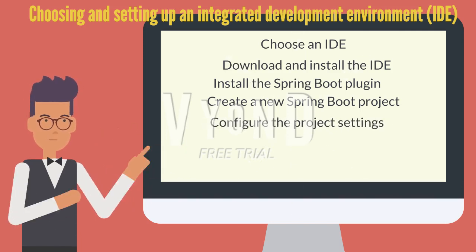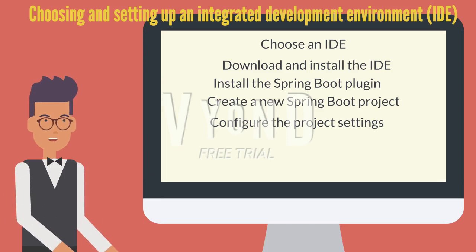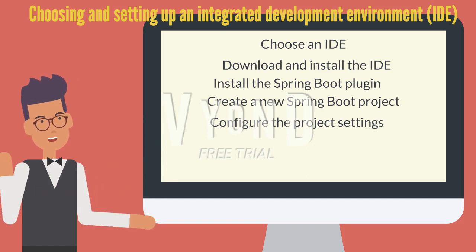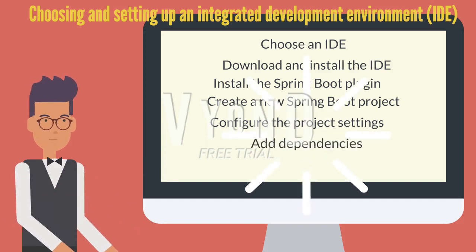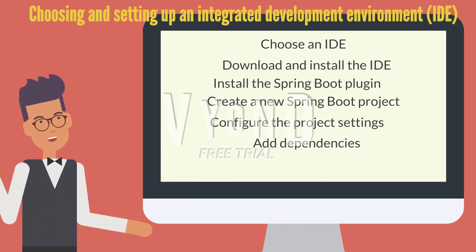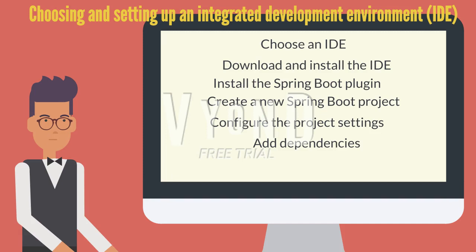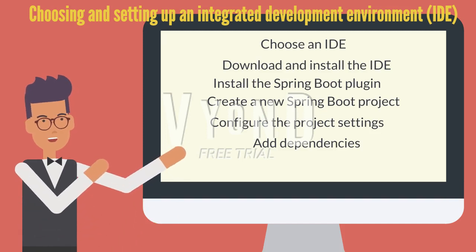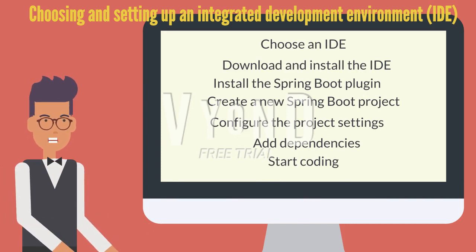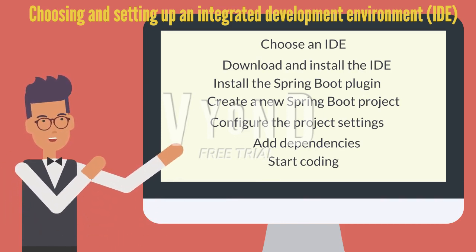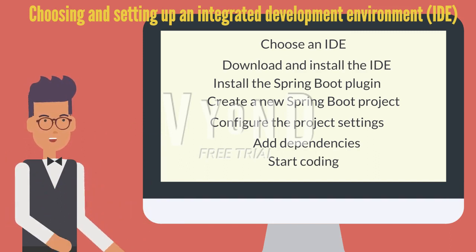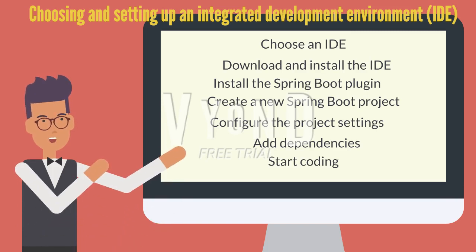When creating a new Spring Boot project, you will need to configure various settings such as the project name, package name, and project location. Follow the prompts to configure these settings. 6. Add dependencies. You can add Spring Boot dependencies to your project using your IDE's build tool or by manually adding them to your project configuration file. 7. Start coding. With your IDE and project setup, you can start coding your Java Spring Boot web application. By following these steps, you can set up your IDE for Java Spring Boot development and start building your web applications.